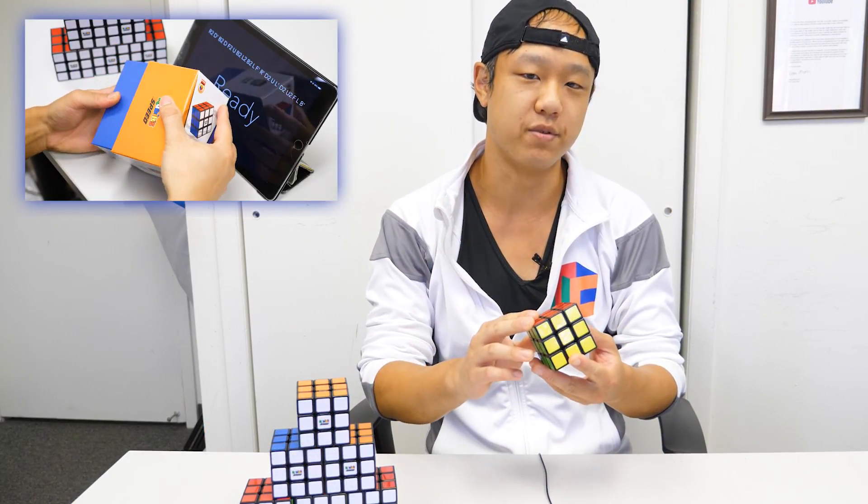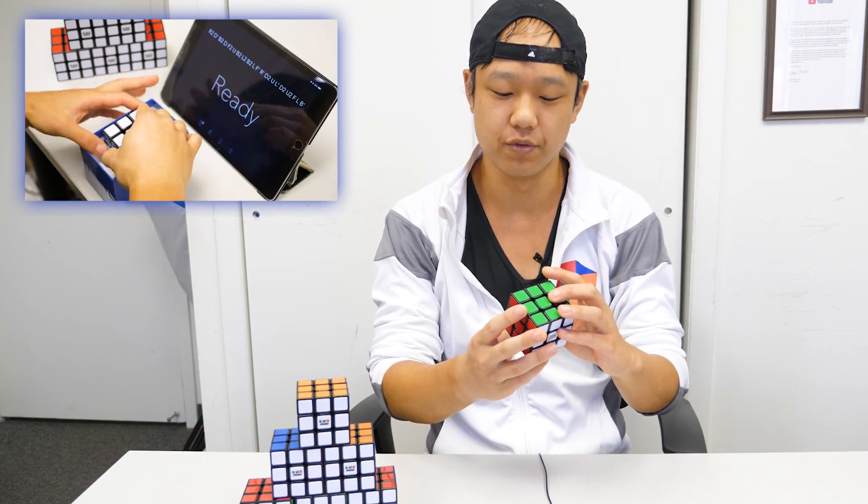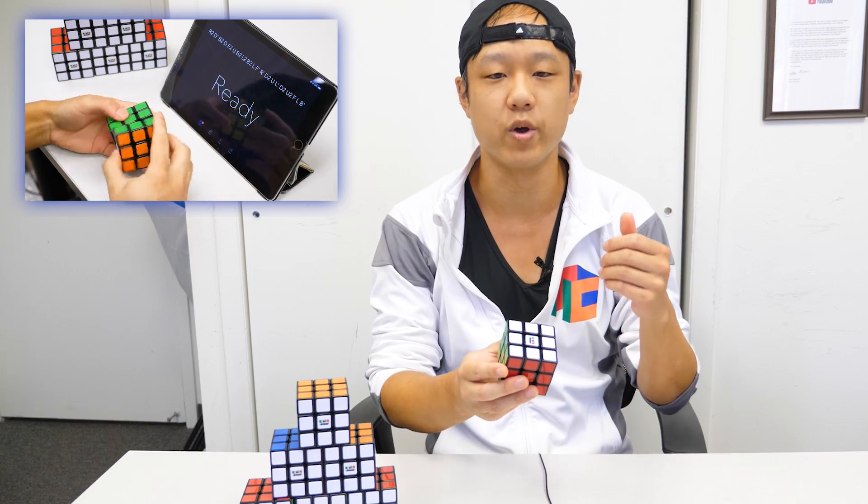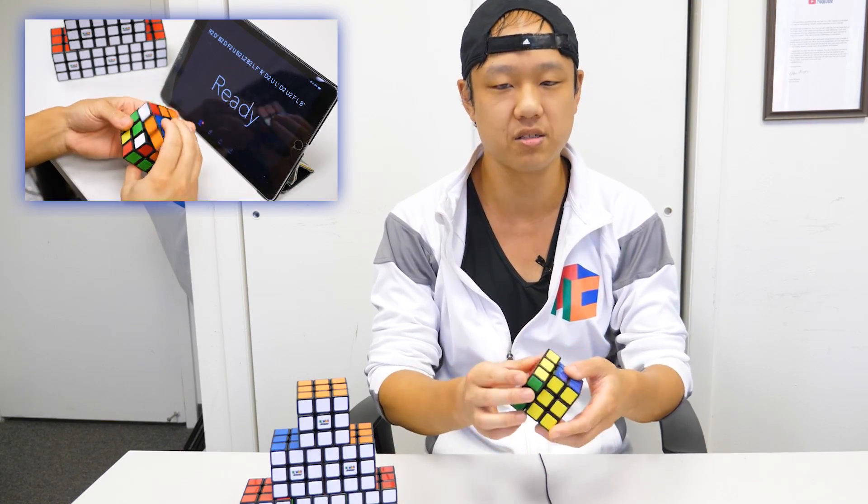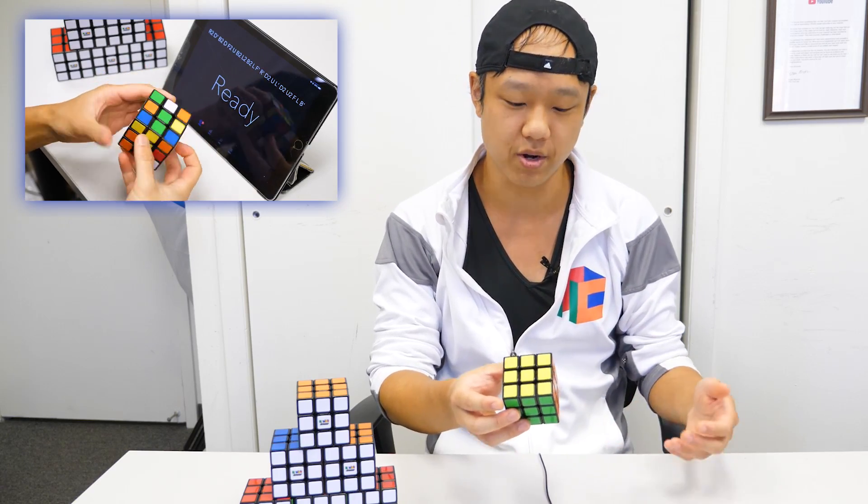This cube is 57 millimeters across, which is standard size for a Rubik's cube, and it weighs 100 grams, which is a little on the heftier side. But honestly, when you're holding it and moving it, it doesn't actually feel all that heavy. You kind of forget about it.